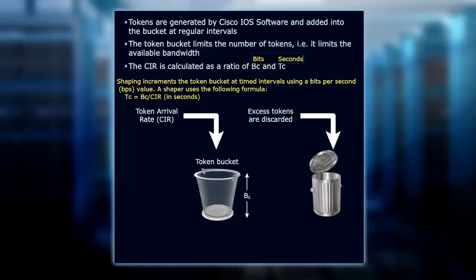To contrast that, shaping increments the token bucket at timed intervals using a bits per second value. The shaper uses a formula of seconds equals bits divided by bits per second. So, if there are tokens in the token bucket, you are allowed to move through. If we've accumulated too many tokens, the excess tokens are discarded. Whatever your committed information rate is, think of that as your B sub C in your token bucket.